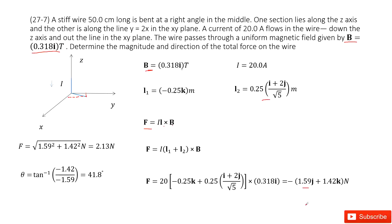Now this magnetic force in vector format has j component and k component. So we need to determine the magnitude and the direction. Magnitude is easy, just square root of 1.59 squared plus 1.42 squared.